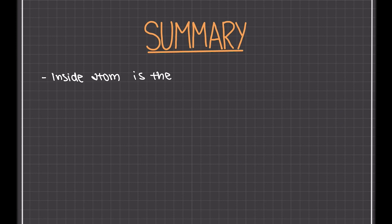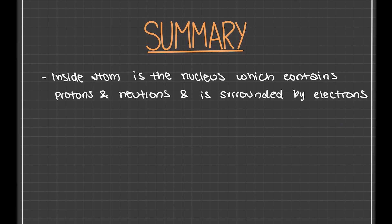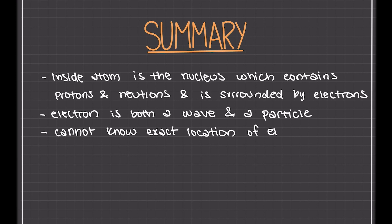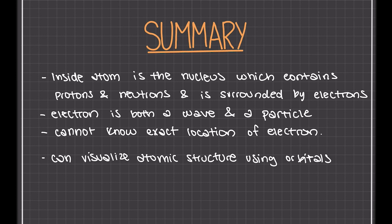Overall, inside every atom there is a nucleus, which contains the protons and neutrons of the atom. The nucleus is surrounded by electrons. As we talked about, electrons are both a wave and a particle. They have wave-particle duality. And because of this, we cannot know the exact location of the electron. We can only know a 90% probability that it will be in a certain region of space. With this knowledge, we can now visualize atomic structure using orbitals, which have specific energies corresponding to the region of space they represent, where there's a 90% probability that the electron will be there.